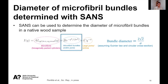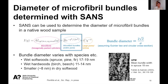In this way SANS can be used to determine the diameter of the microfibril bundles in native wood — without any cutting, freezing, or treatment to the sample. Using this model, if one assumes the Guinier law and a circular cross-section, there is an equation to get the bundle diameter. This approach produces values for the bundle diameter that vary a bit between different types of wood, but at least in softwood they are very similar to what was determined before with AFM, and in hardwoods a bit smaller — especially when the wood is dried.